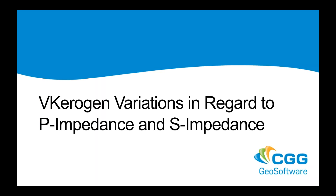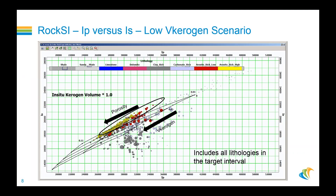Let's look at the v-kerogen variations in response to P-impedance and shear impedance. Looking at the template that resulted from the model, we see that it is difficult to decouple the changes in porosity from the changes in v-kerogen — they almost change in the same direction. This indicates that using only P-impedance and shear impedance is not very feasible for decoupling porosity and kerogen volume.